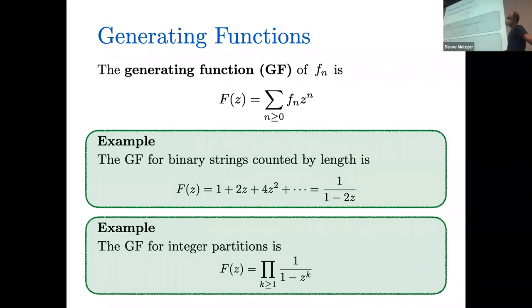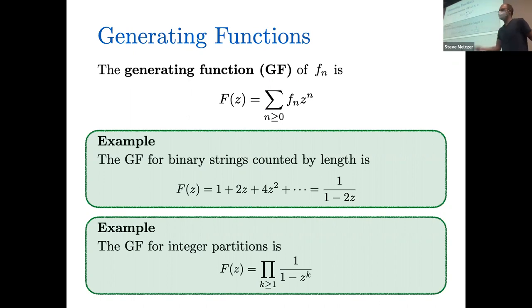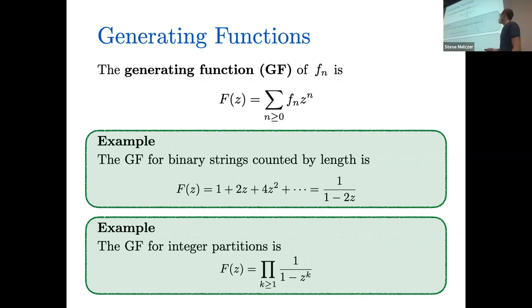Our tool for doing all this will be generating functions. The generating function of a sequence is a series in a variable z whose coefficients are the terms of your sequence. A common example: the generating function for binary strings, where the sequence is 2^n, is just the geometric series 1/(1-2z). You can define all this formally, but today we'll be dealing with generating functions that represent actual complex-valued analytic functions. There are also sequences that are very complicated, like integer partitions, and they have nice representations for their generating functions as well.